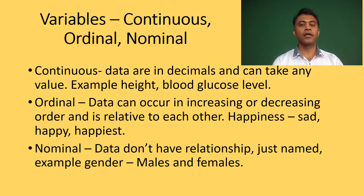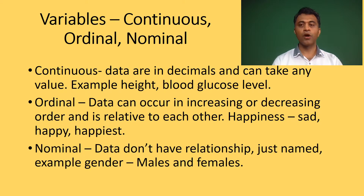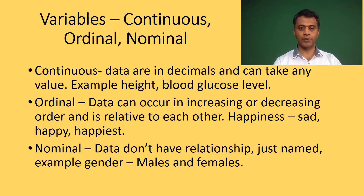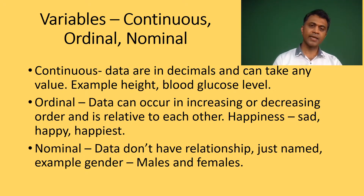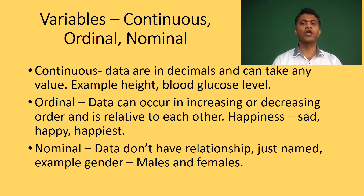Further categories of variables include the types, which are continuous, ordinal, and nominal — the main three types. The continuous variable: data are collected in decimals or in numbers and can take any value including zero. Examples would be height and blood glucose level, where you can have a range of values.